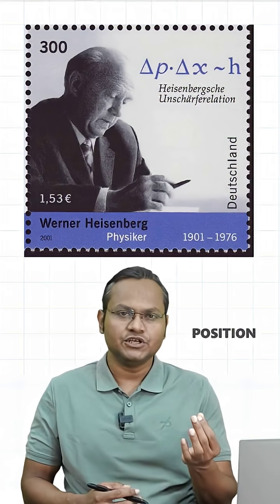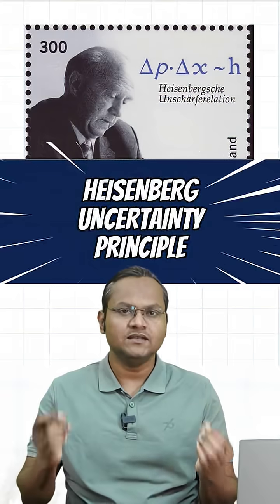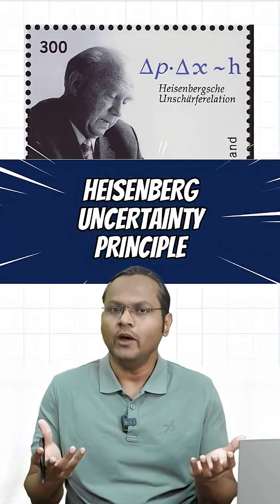Quantum mechanics में हम particle के position और velocity को accurately measure नहीं कर सकते हैं. This is called the Heisenberg Uncertainty Principle. लेकिन ऐसा क्यों है?